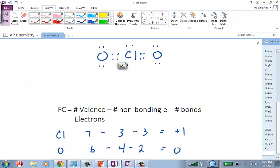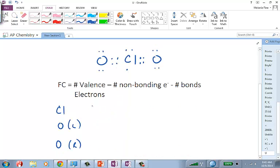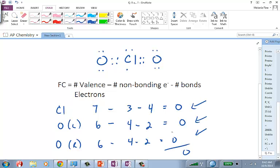So let's now calculate formal charge again. Chlorine has seven valence electrons now. It's got three non-bonding electrons still, but now it's got one, two, three, four bonds. So its formal charge is zero. Oxygen on the left has six valence electrons minus four non-bonding electrons minus two bonds, which is zero, and oxygen on the right is exactly the same. So now the total formal charge is zero, but the formal charge of each one of the atoms is also zero. So this is our ideal Lewis dot structure for chlorine dioxide, given the formal charges.